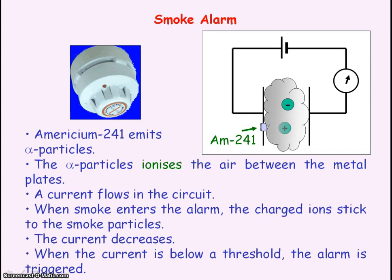The advantages of using alpha particles are: one, they are strongly ionising, which creates the current; and two, alpha particles have low penetrating power, so they will not penetrate out of the smoke alarm and therefore will not cause harm to people.